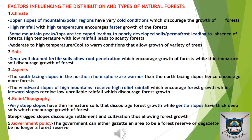Whenever we look at climate, we focus on elements like temperature and rainfall, as well as cool, warm, and hot conditions. The upper slopes of mountains or polar regions have very cold conditions which discourage forest growth. High rainfall with high temperature encourages faster growth of forests. Some mountain peaks are ice-capped, leading to permafrost conditions and absence of forests. High temperature with low rainfall leads to scanty forests, while moderate to high temperature allows growth of a variety of trees.